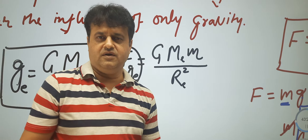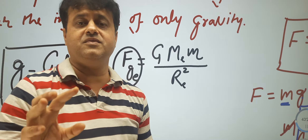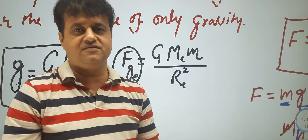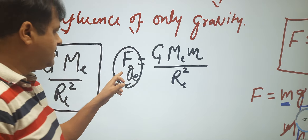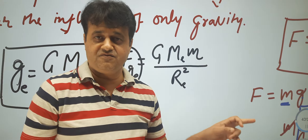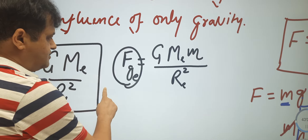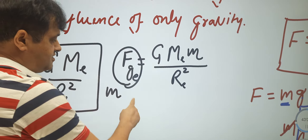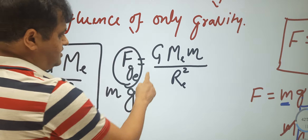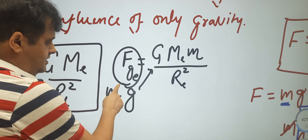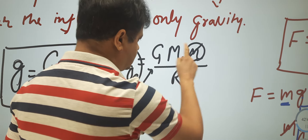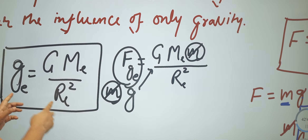From the second law of motion, any external unbalanced force equals mass into acceleration. Equating gravitational force to mg gives F = mg. Setting these equal, the mass of the object cancels from both sides, and we get the formula for g.